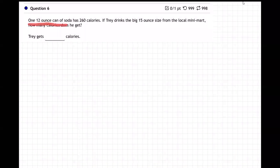Okay, so one 12 ounce can of soda has 260 calories. If Trey drinks the big 15 ounce size from the local mini mart, how many calories does he get? All right, so how are we going to figure that out?